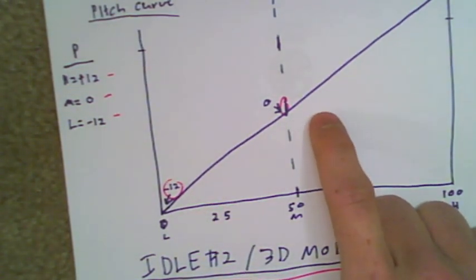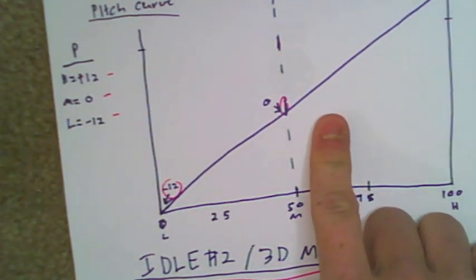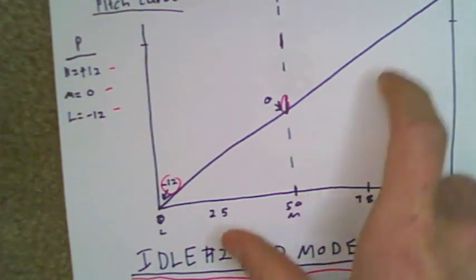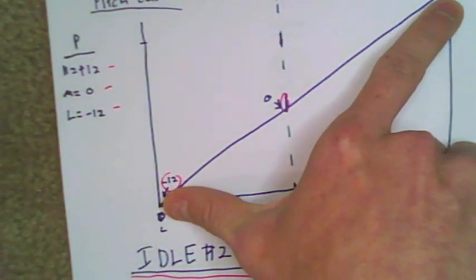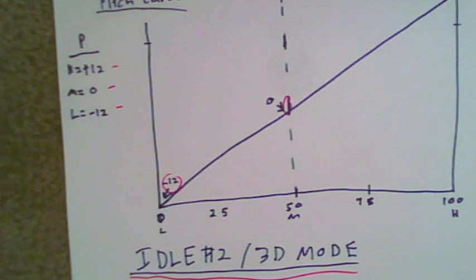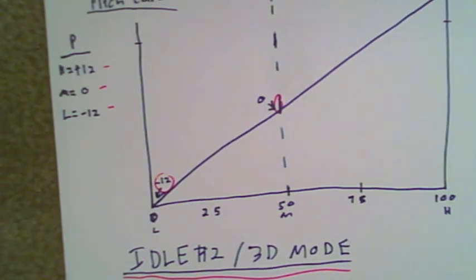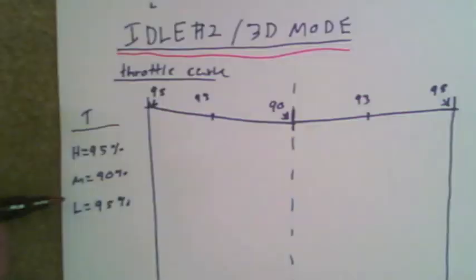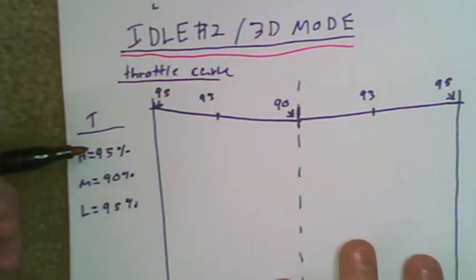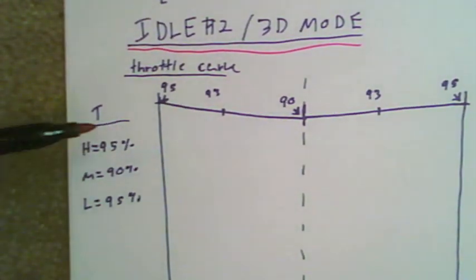When we kick into our idle 2 throttle curve, it's going to give us a little bit more power, so I added that extra amount of pitch on there to compensate for the load and get us a little bit more pitch for quicker movements and things like that. So, let's move on to the throttle curve. Looking at the throttle curve here for our 3D mode, it's going to be very similar to the idle up one or sport flight mode. We're just going to get a little bit more power out of the motor.